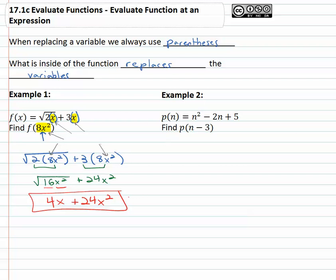Let's take a look at another example. In example two we're asked if p of n equals n squared minus 2n plus 5 and we're asked to find p of n minus 3.